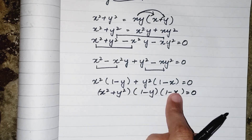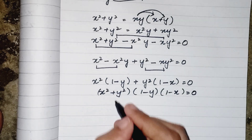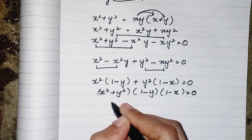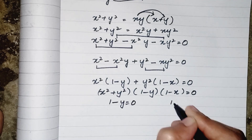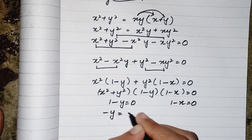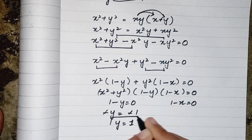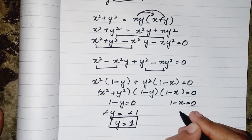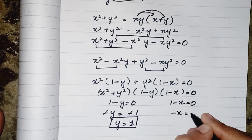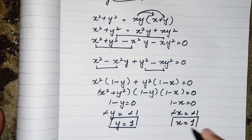We can see the bracketed factors, so we equate each factor to zero. One minus y equals zero gives y equals one. One minus x equals zero gives x equals one. So the answer is x equals one and y equals one. Hope you like the video, please subscribe, take care, bye.